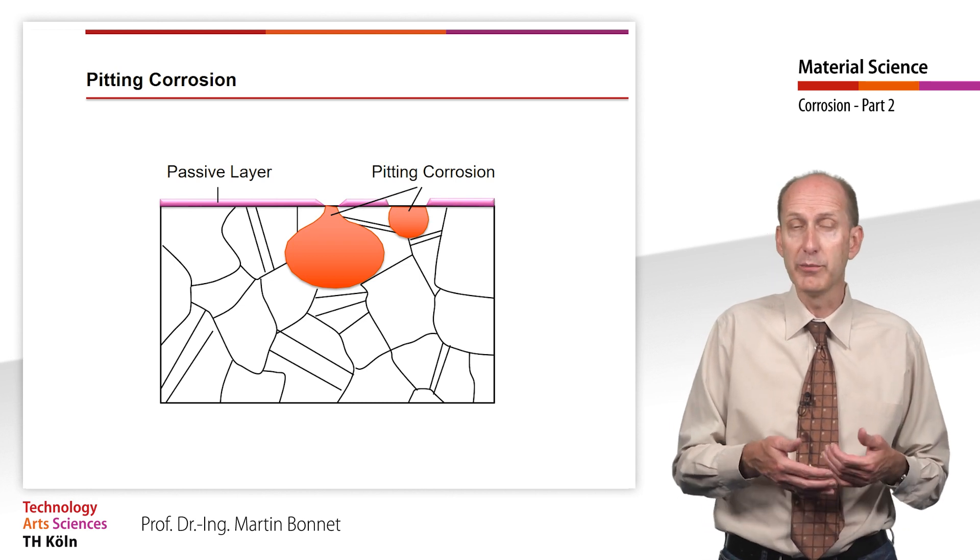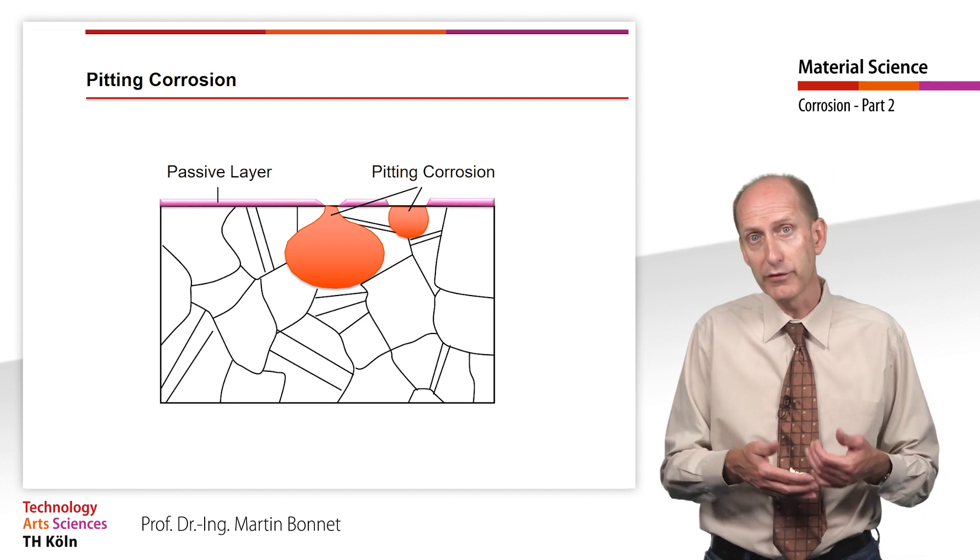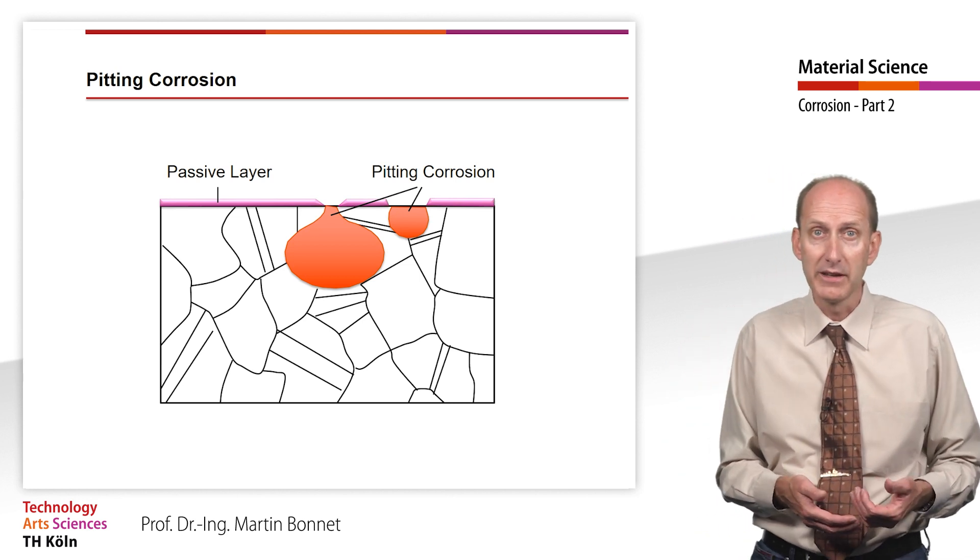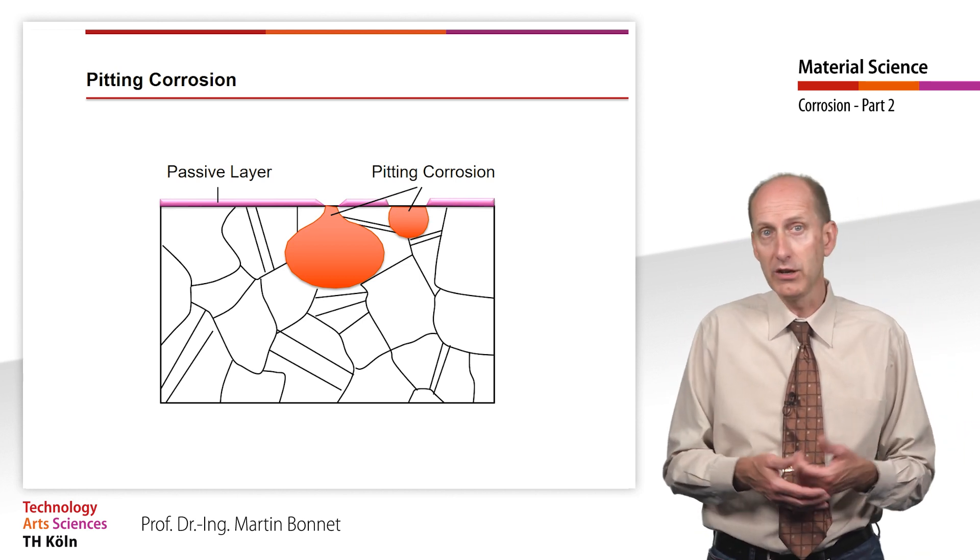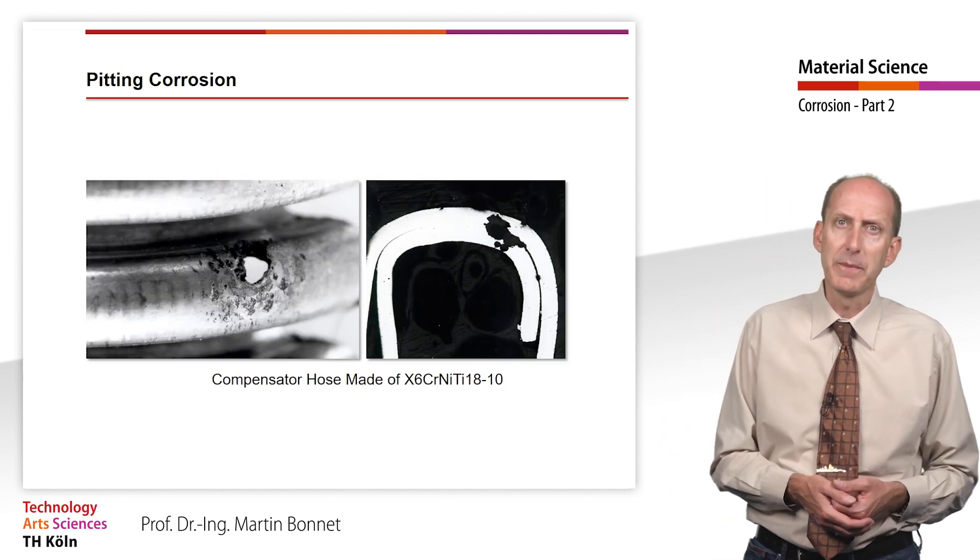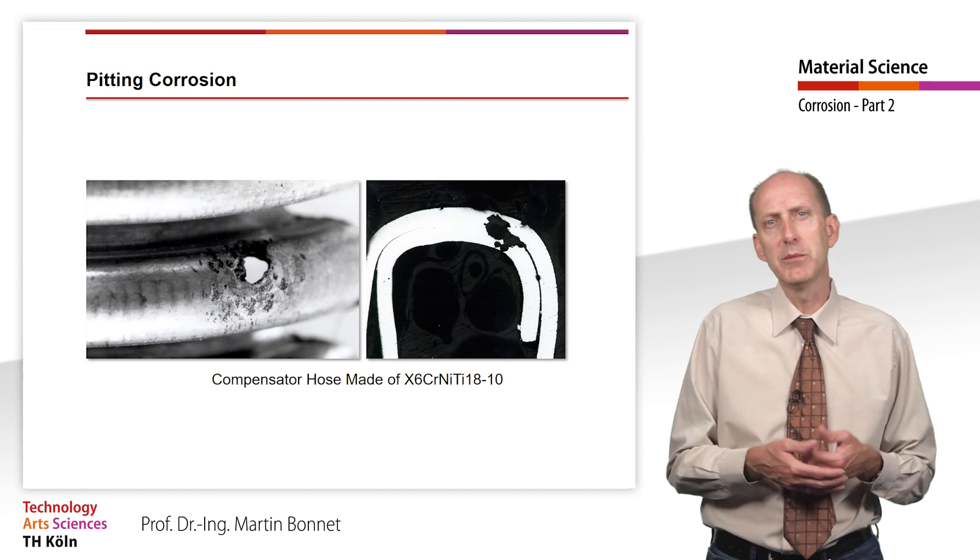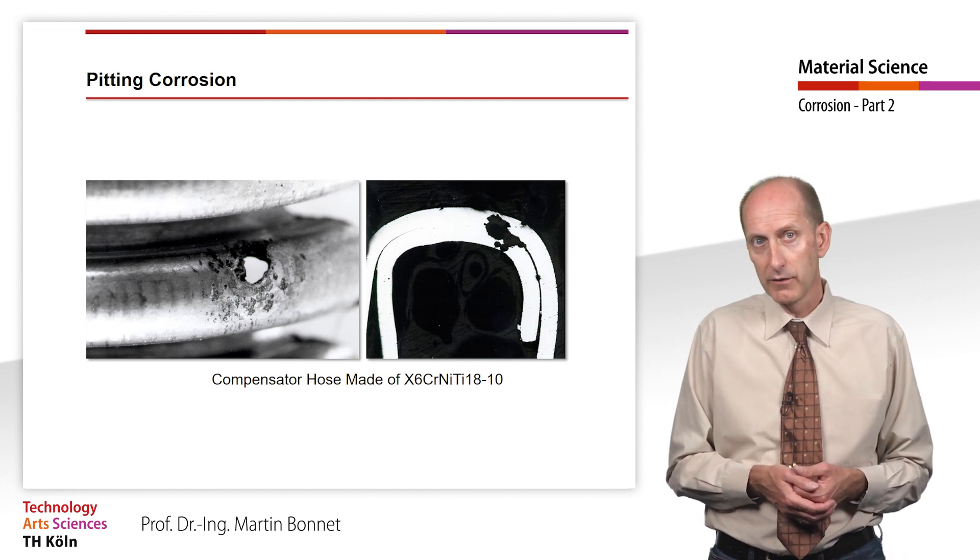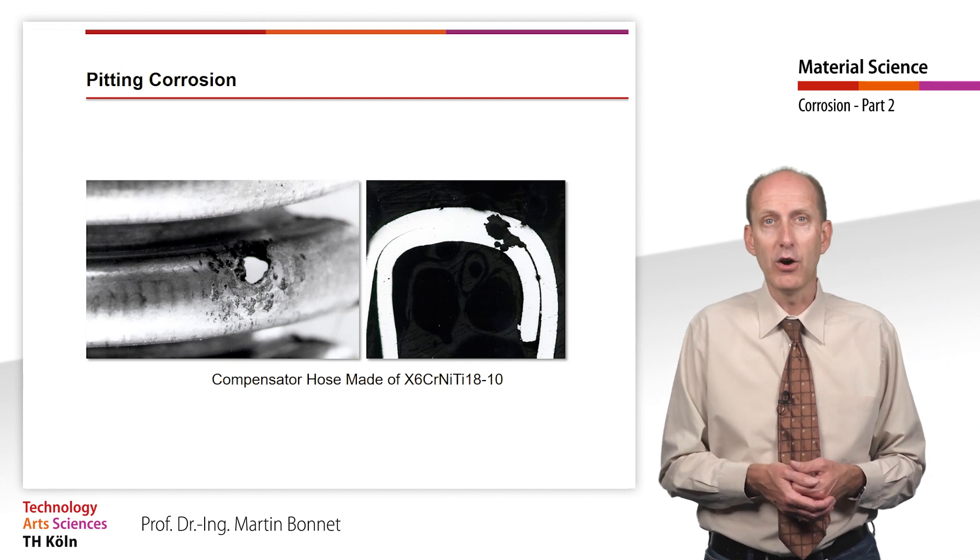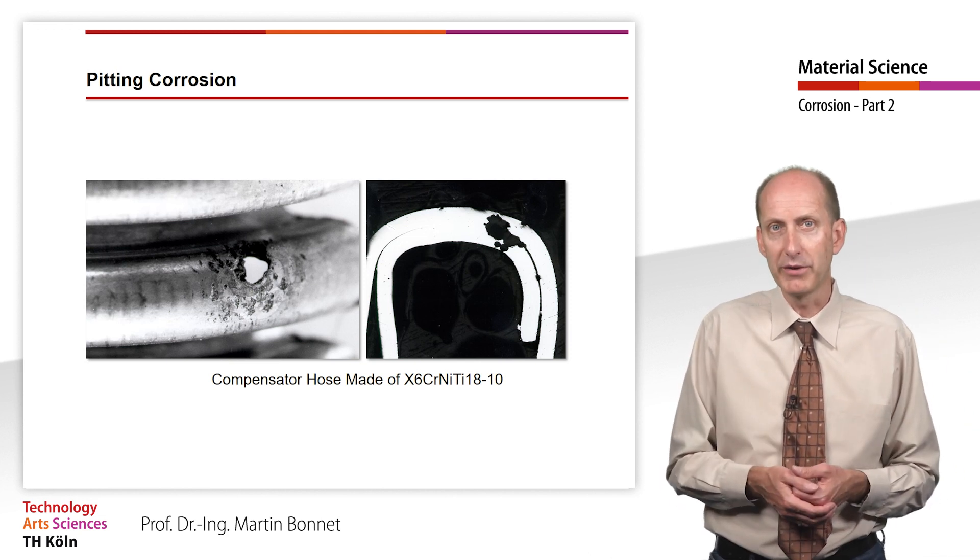Since a corrosion-aggressive medium almost always forms at the bottom of the hole, which for geometric reasons is neither washed away nor diluted to any great extent, the corrosion rate here may well be several millimeters per year. From the media side, the damage is sometimes barely visible and only comes to light when the hole breaks through.